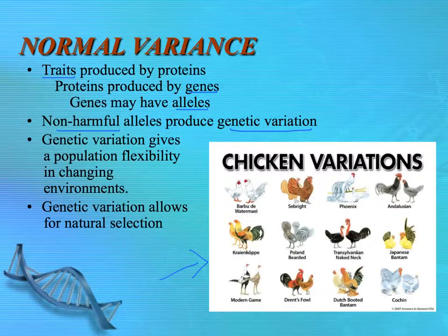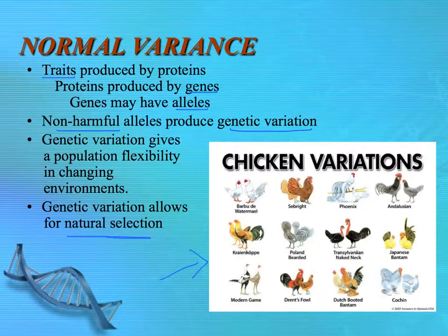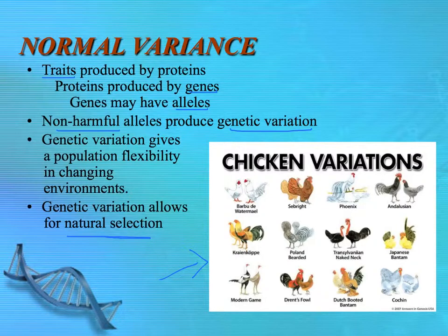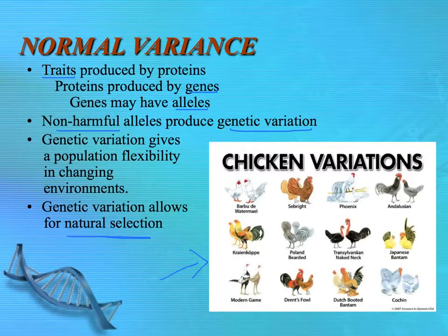We depend on genetic variation for natural selection for populations to survive in changing conditions. We also depend on it for human selection as we've made particular breeds of animals, choosing from traits already present in the population. In agriculture, the tendency has been to go to monoculture — one crop, one variety — and this can be a problem. In the 1970s, we lost a lot of the corn crop because there was really only one type predominantly planted, and a disease came through that that variety was not resistant to, so most farmers lost their entire planting. Genetic variation is important for the success of any population, be it plant, animal, or human.